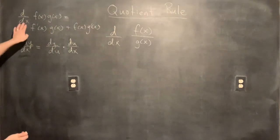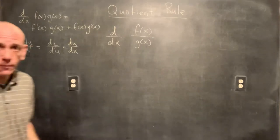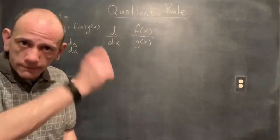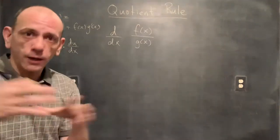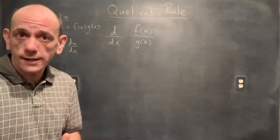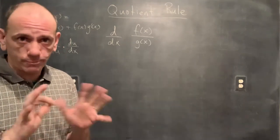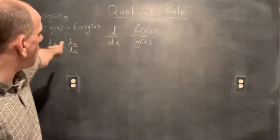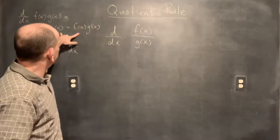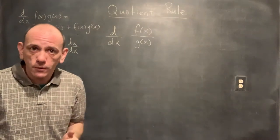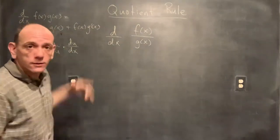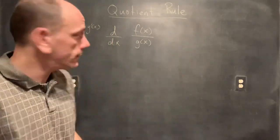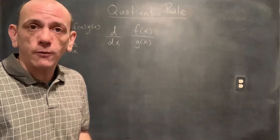We've got our product rule and chain rule. Now, we could go back to the limit definition of the derivative and derive the quotient rule by going through all the x plus delta-x minus f(x) stuff. But since we've already got these tools, and we know that division is simply multiplying by the reciprocal, we can leverage the work we've already done and make life a bit easier. This proof becomes a bit slicker that way.